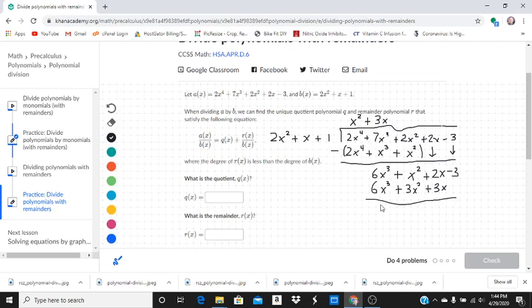So 6x cubed minus 6x cubed is 0. We're subtracting this whole quantity. x squared minus 3x squared is going to be a negative 2x squared. 2x minus 3x is a minus x. We're going to bring down the minus 3.